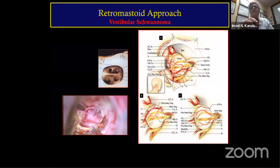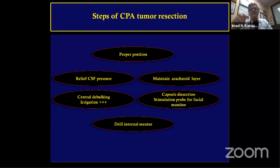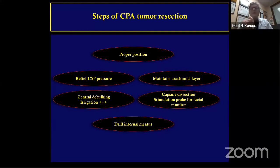I then start with central debulking and dissect the surrounding tissue while maintaining the arachnoid. The key steps are: proper positioning, maintaining the arachnoid layer, relieving CSF, and capsule dissection. I use a stimulation probe — there has been debate that frequent stimulation decreases facial nerve amplitude, but I've done this for 14 years at low power with no problem.